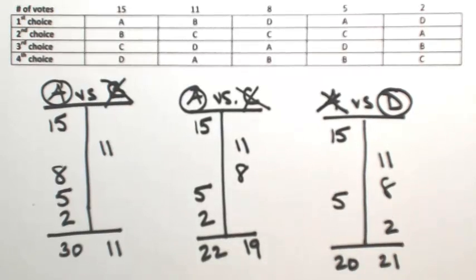Okay, so maybe D is the Condorcet winner. So now we have to pit D against another candidate. Let's do D versus B.